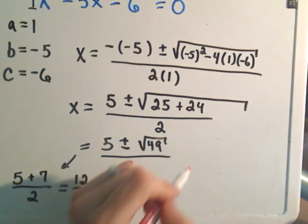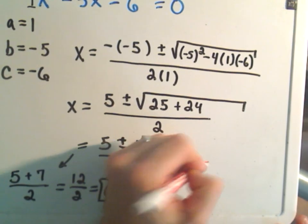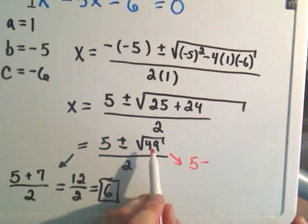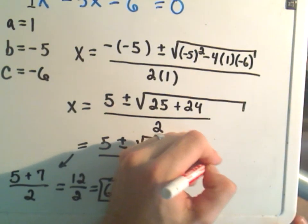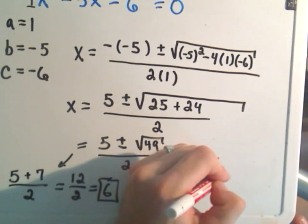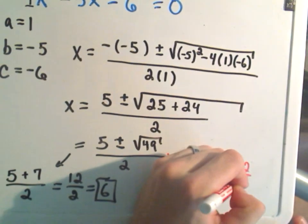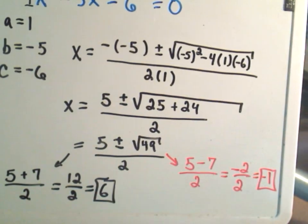The other solution is when we use 5 minus the square root of 49. The square root of 49 is 7, over 2. In this case, I get -2 over 2, or -1 is my answer.